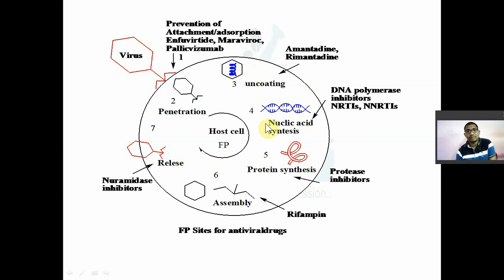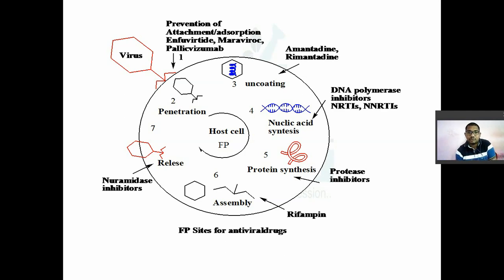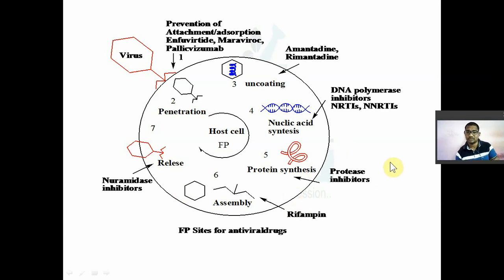From RNA, first DNA is synthesized — a complementary DNA is made from RNA, and that DNA is replicated, transcribed, and translated. The conversion of RNA to DNA requires an enzyme known as reverse transcriptase, which is specifically found in retroviruses and RNA viruses. For example, HIV virus has a reverse transcriptase enzyme. Single-stranded RNA is converted into double-stranded DNA by reverse transcriptase, followed by replication, transcription, and translation. Protease inhibitors inhibit protein synthesis at the translation step.